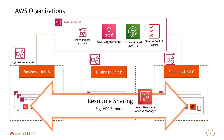Once you've established your organization, you can begin to share resources between accounts within it. One example is sharing VPC subnets using AWS Resource Access Manager — you can take a VPC in one account, pick a subnet, and share it to another AWS account. Users of that other account can launch resources into that VPC subnet while the sharing account still owns and manages the VPC itself.